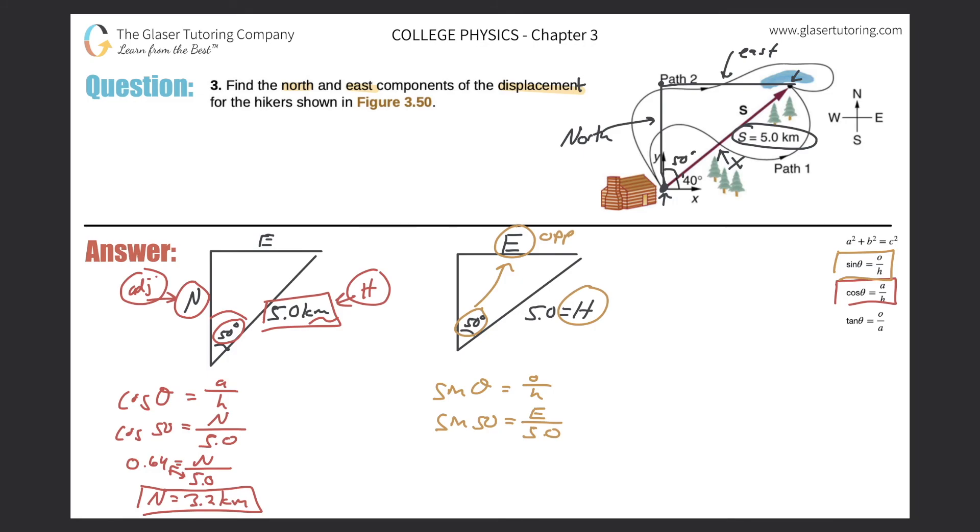Let's plug in the sine of 50 in the calculator. Sine of 50 works out to be 0.77, rounding to 2 sig figs, equals the eastern component over 5.0. How do we solve? Cross multiply. So the eastern component of this displacement is 0.77 times 5, and with 2 sig figs we need, it's going to be 3.9 kilometers after we round. That would be the eastern component.